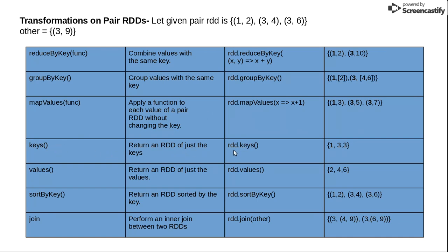keys returns an RDD of just the keys — so applying the keys function on an RDD returns 1 comma 3 comma 3. values returns all the values, so ra.values returns 2 comma 4 comma 6. sortByKey sorts all values by keys, so the output is 1 comma 2, 3 comma 4, and 3 comma 6, which is already in sorted order.